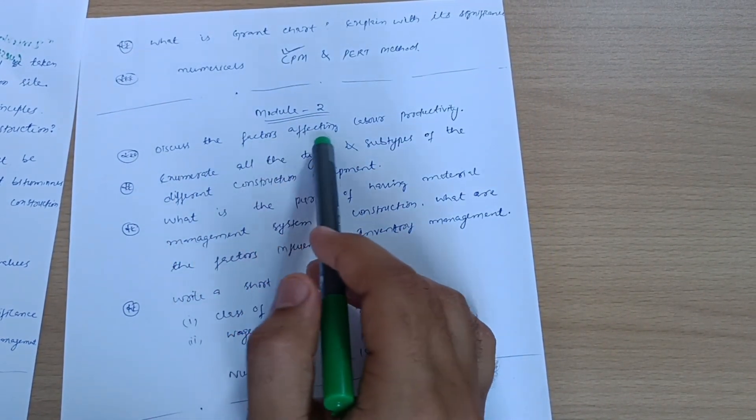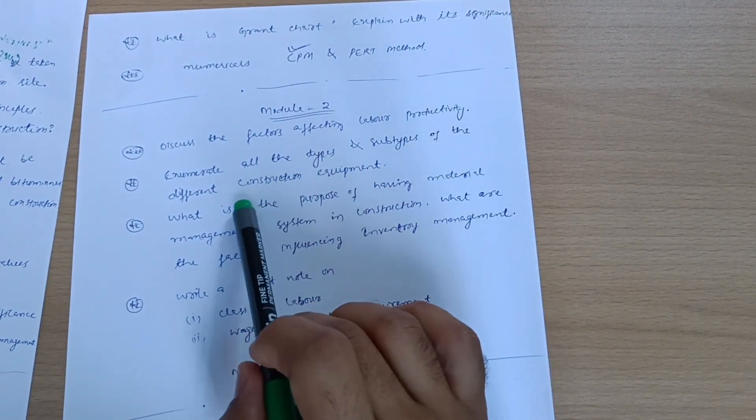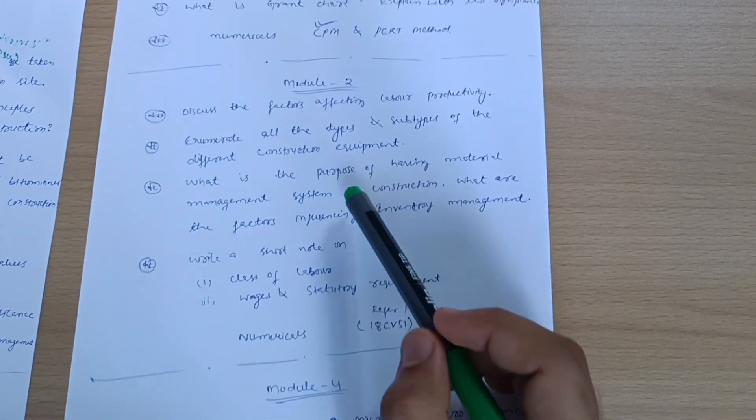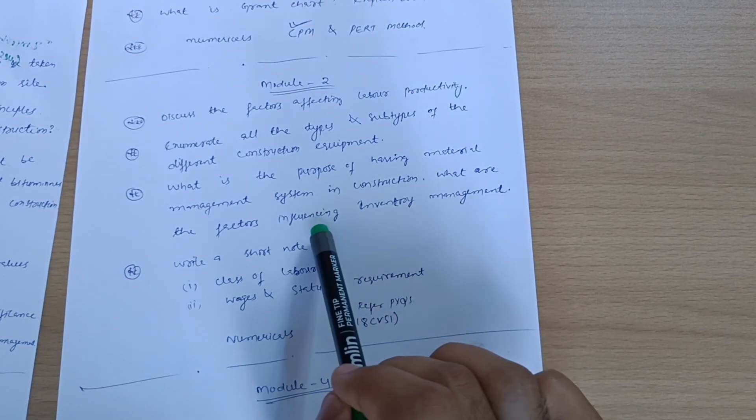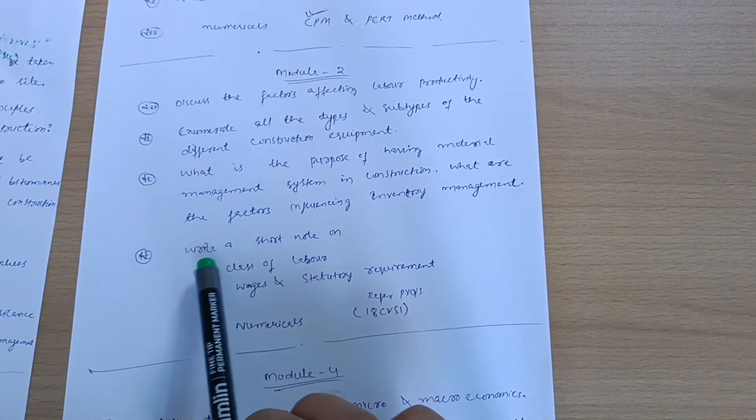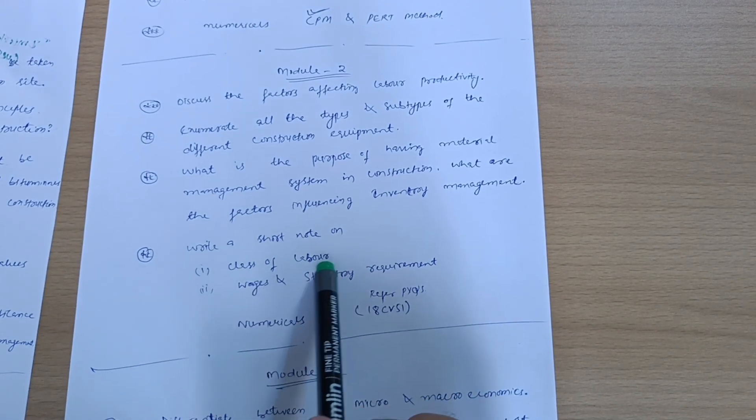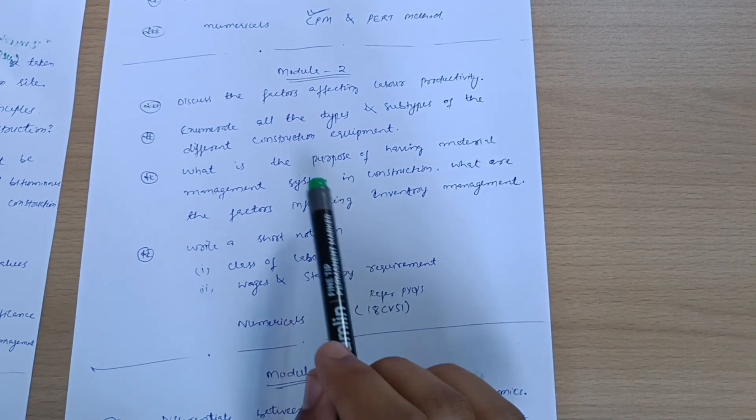Next is Module 2. Discuss the factors affecting labor productivity. Enumerate all the types and subtypes of the different construction equipment. What is the purpose of having material management system in construction, and what are the factors influencing inventory management?